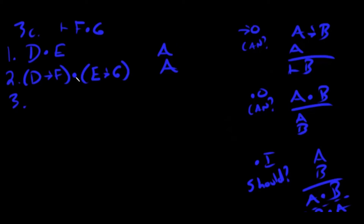Do I have any arrows not in parentheses? I have two arrows — 'd arrow f' and 'e arrow g' — but they're in parentheses; they're locked. I think of it like Zelda: you need the big key to get into this room. There are the f and g that I need, hiding right there, but I can't get to them yet. So: can I do arrow-out? No. Do I have any dots not in parentheses? Yes — I've got two I can break apart.